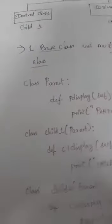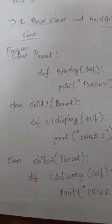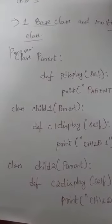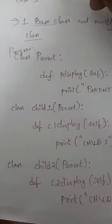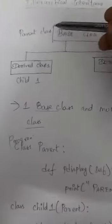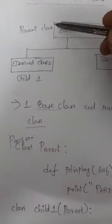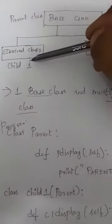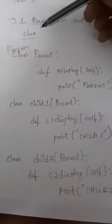Now we want to see an example program. In our example we need to create three classes: one parent class, which is the base class, and two child classes — one class for child one and another class for child two.